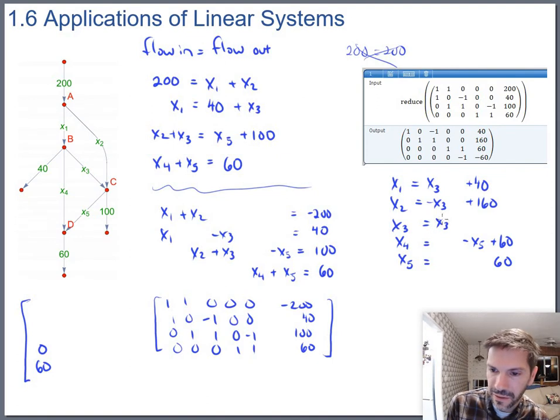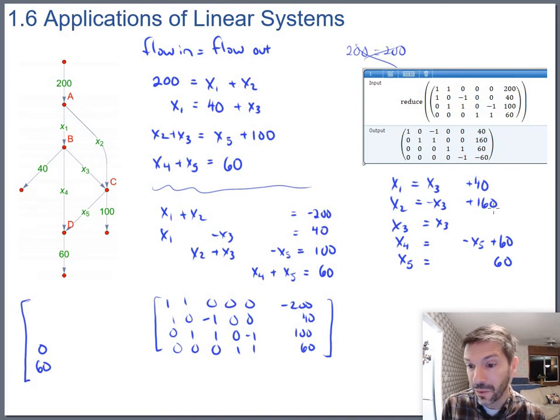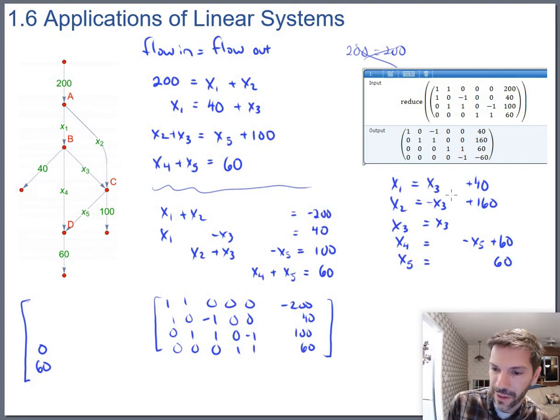x3 has no restraints on it, although I'm assuming we don't want negative flow here. So I'd say the smallest x3 could be would be zero. And looking at x2, x2 is negative x3 plus 160. So I'm assuming the biggest that x3 should be, could be, would be 160. If it's bigger than that, then x2 is going negative.